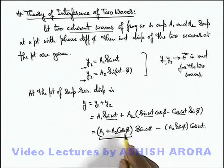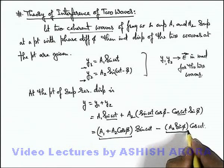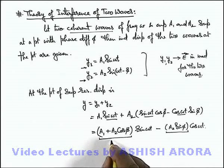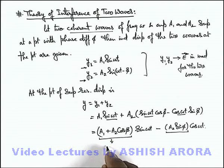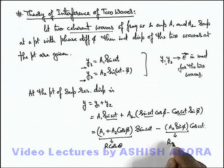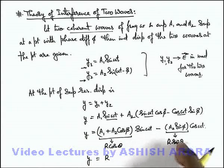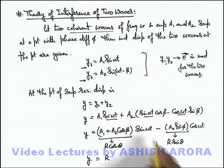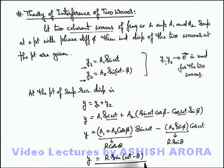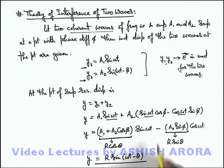The factors (a1 + a2 cos phi) and (a2 sin phi) are constants that do not depend on time. If we replace these factors with r cos theta and r sine theta respectively, then the resulting displacement can be written as r sine(omega t minus theta). This is the expression obtained after replacing these 2 constant terms.